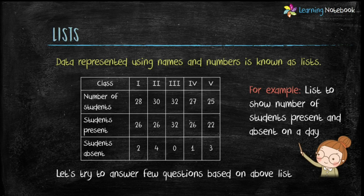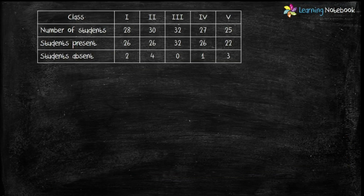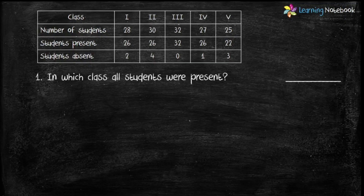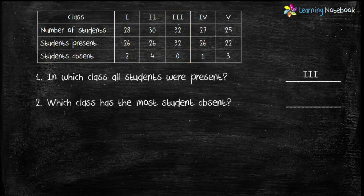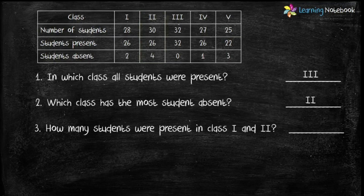Let's answer a few questions based on this list. Question 1: In which class were all students present? Take a look at the list — there are no students absent in class 3, so all students were present in class 3. Question 2: Which class has the most students absent? Class 2 has 4 students absent, which is the highest number among all classes, so the answer is class 2.